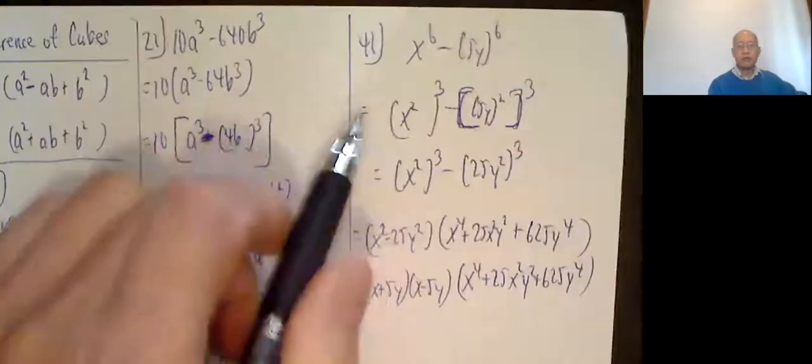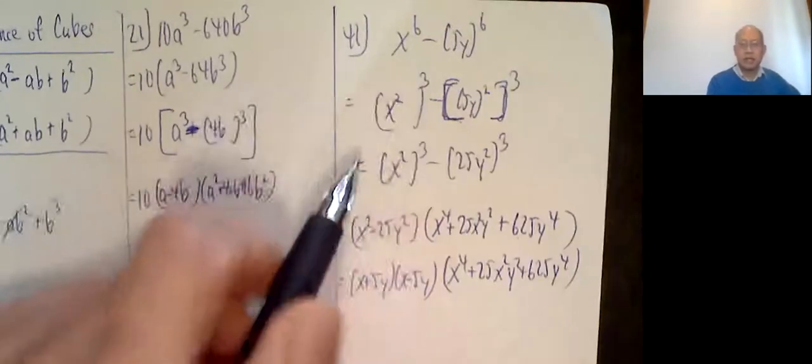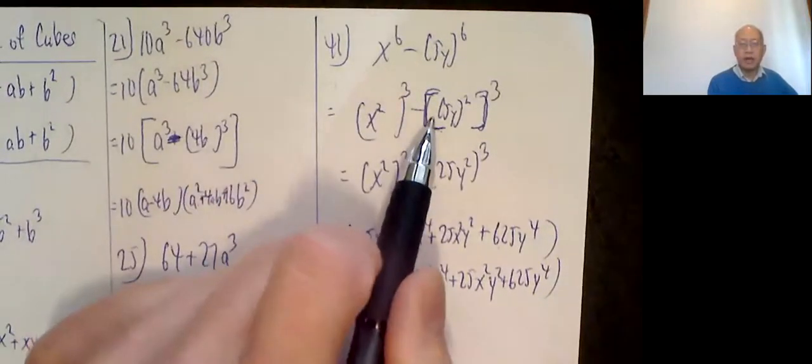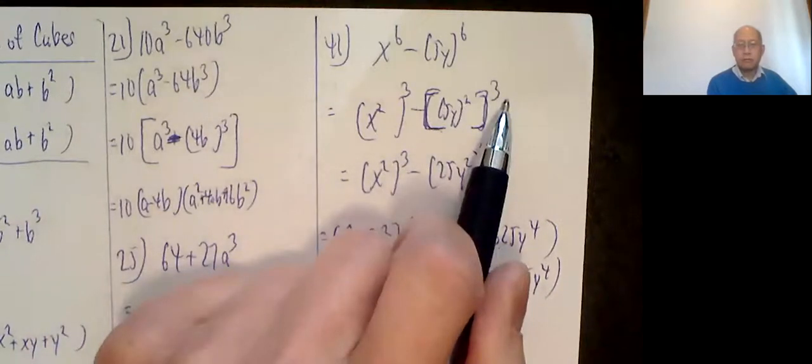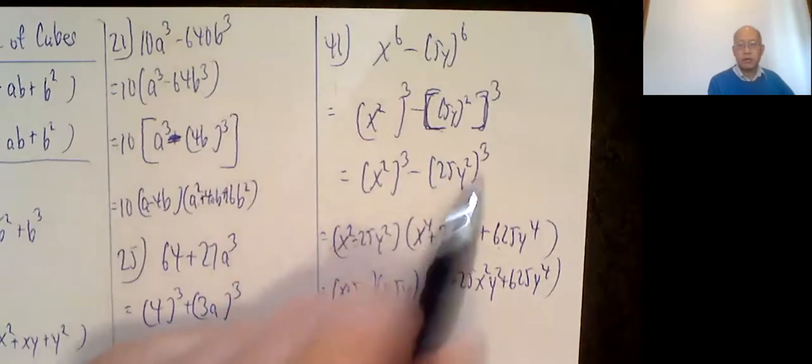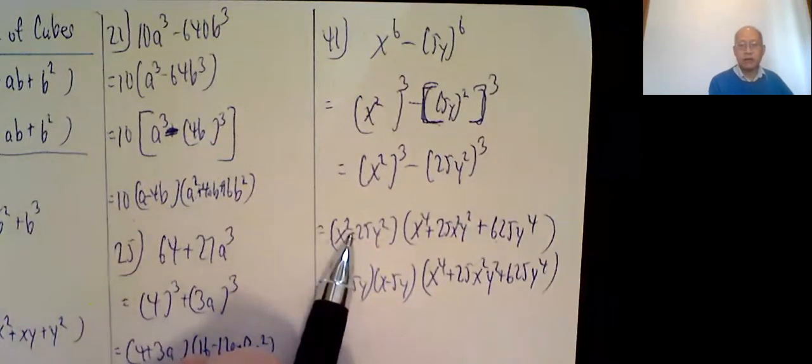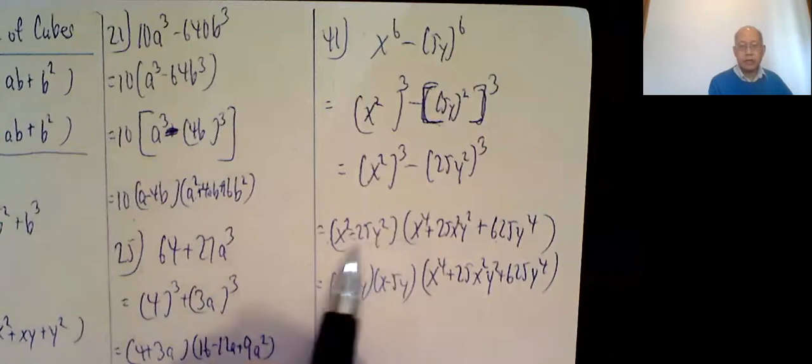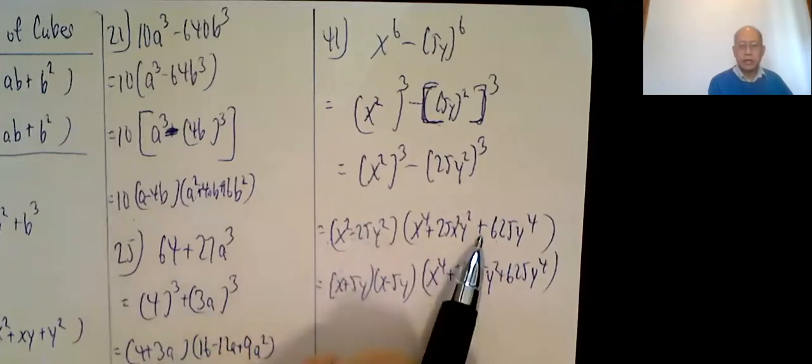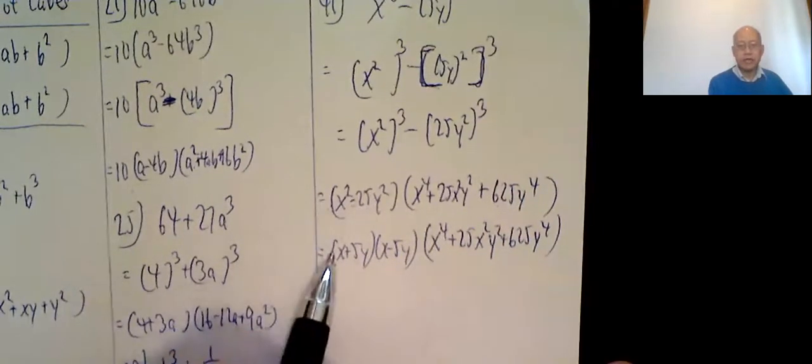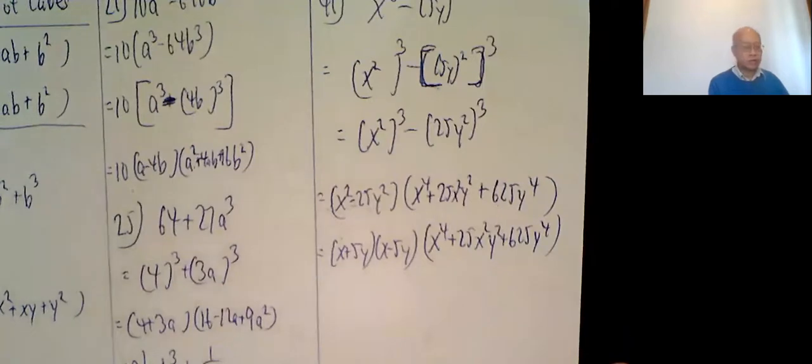And finally, 41 is similar. x to the 6 minus 25y to the 6. I'm going to treat this as x squared cubed minus 25y squared cubed. We write it as x squared cubed minus 25y squared cubed. So x squared minus 25y squared. x squared squared, x to the 4th. Plus the product of these, 25x squared y squared. Plus 25y squared squared is 625y to the 4th. Leave this one alone. But this one's a difference of two squares. So x plus 5y, x minus 5y. And leave this stuff alone.